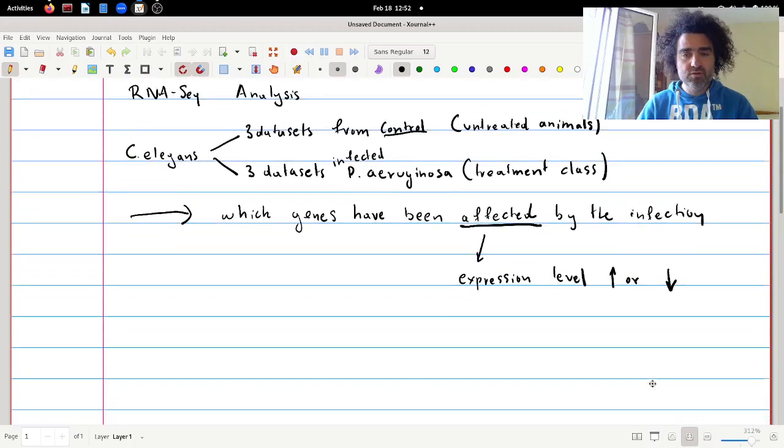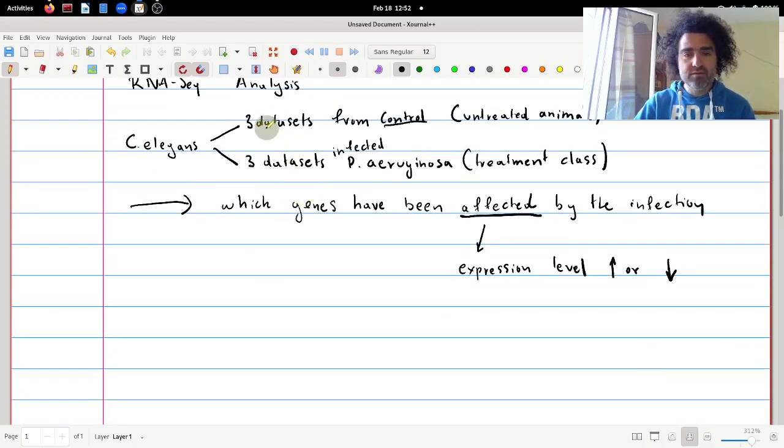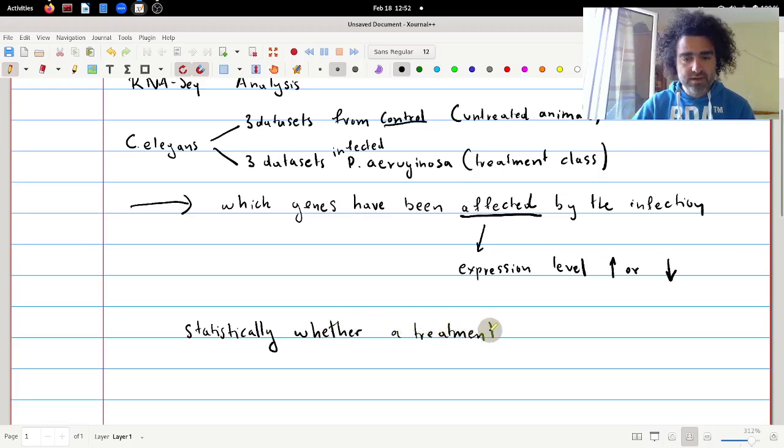Now we cannot use just one animal from each class to study this. We need at least two animals. And the reason is that in such experiments we are going to evaluate statistically whether a treatment has an effect.